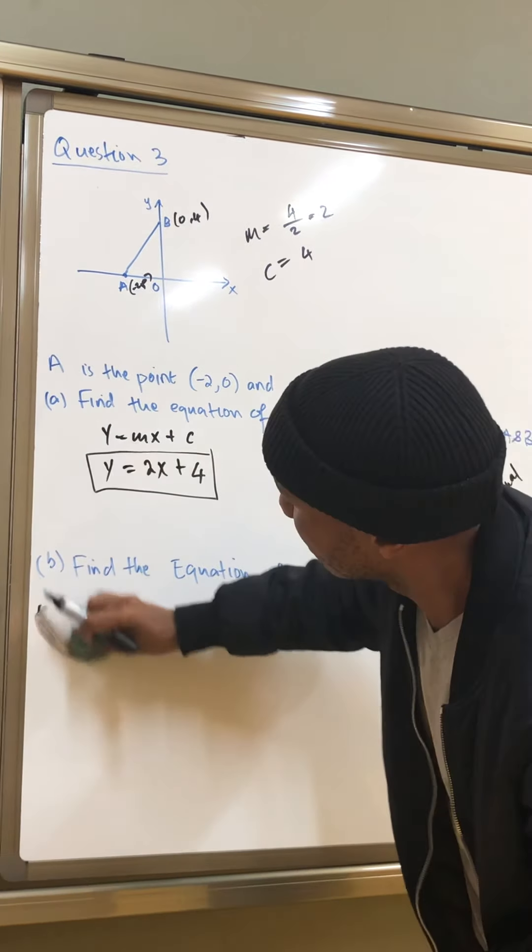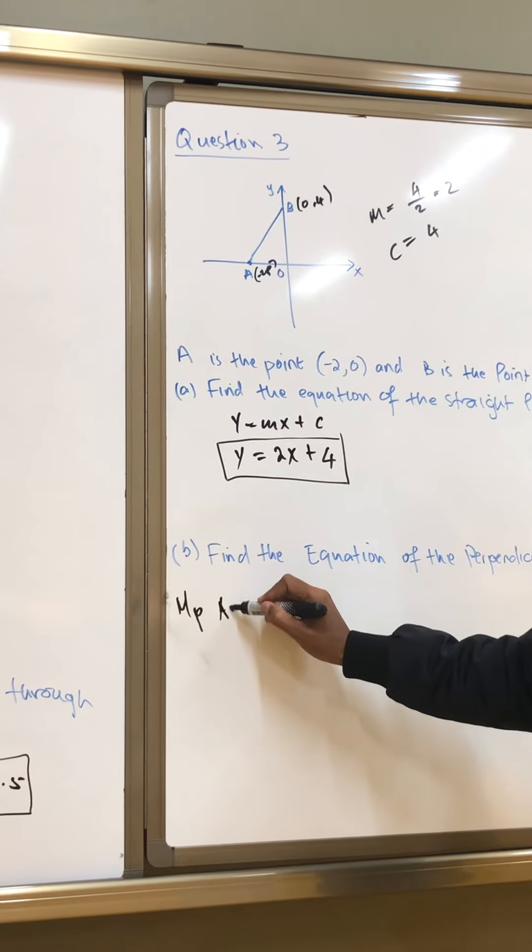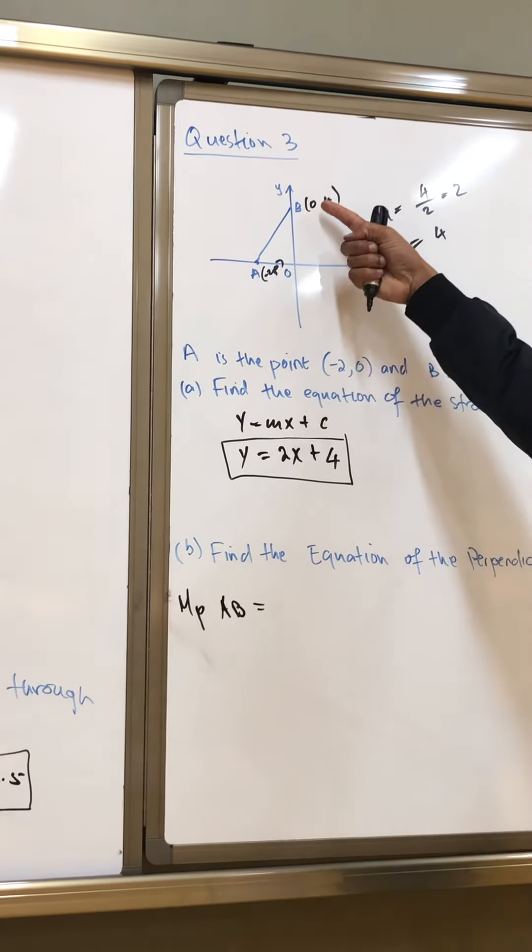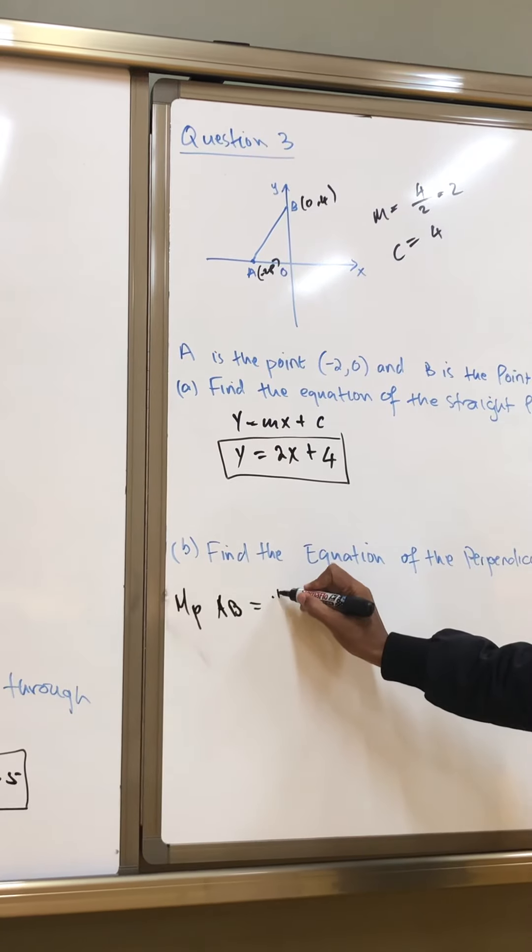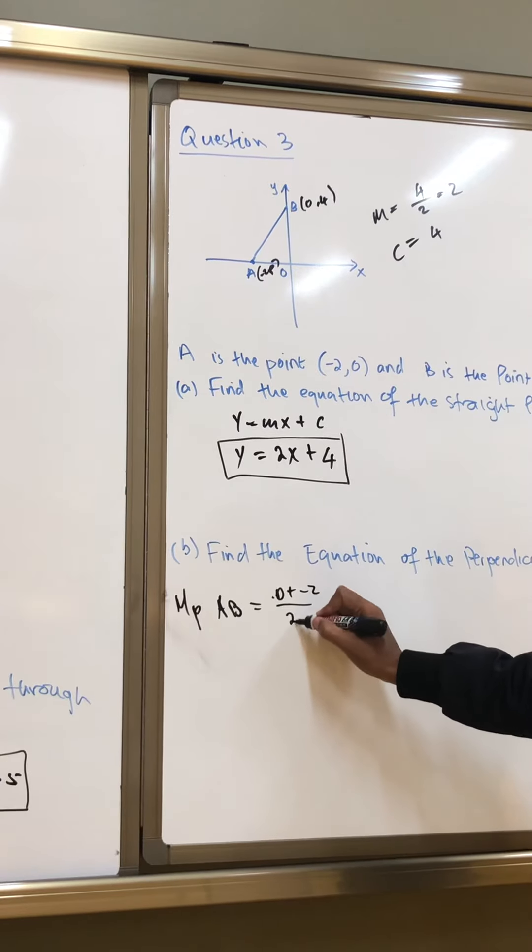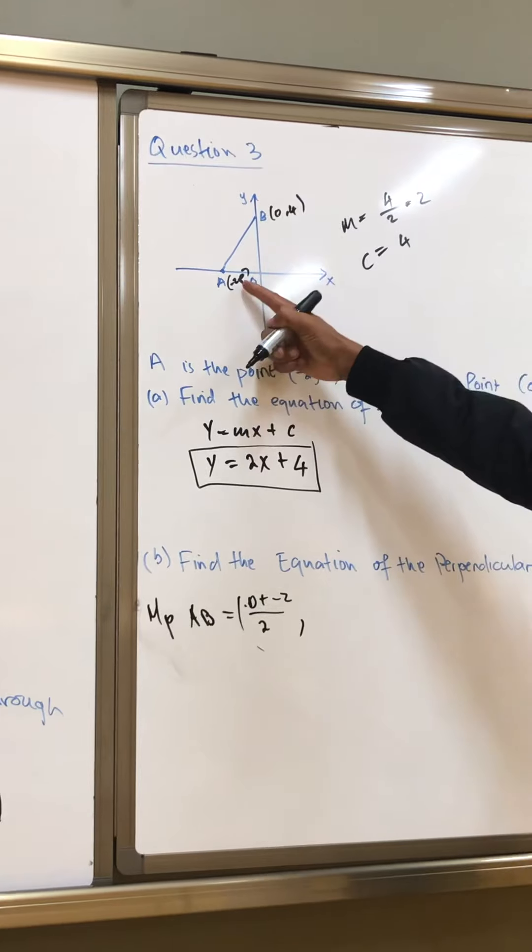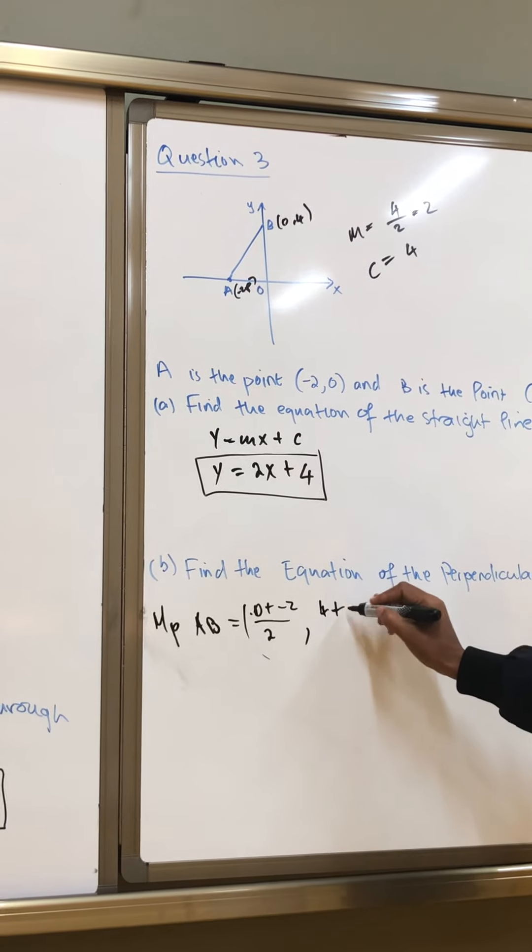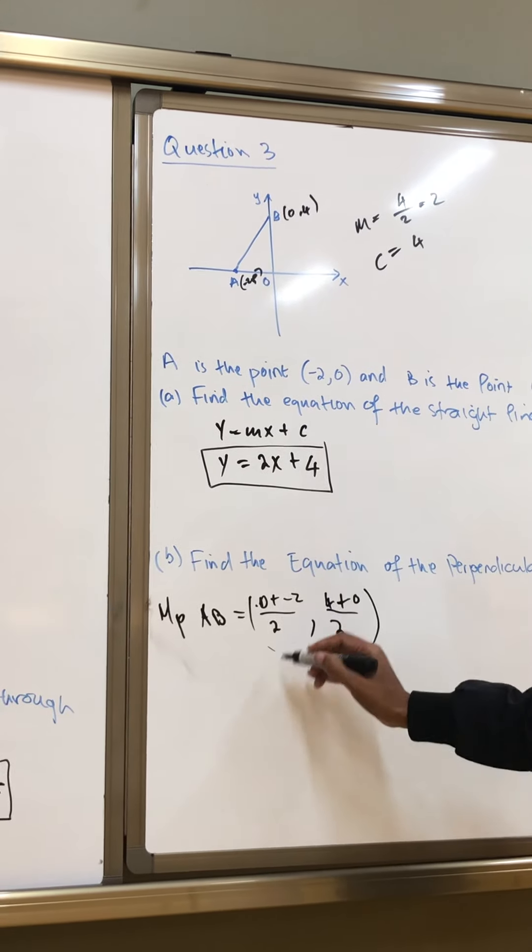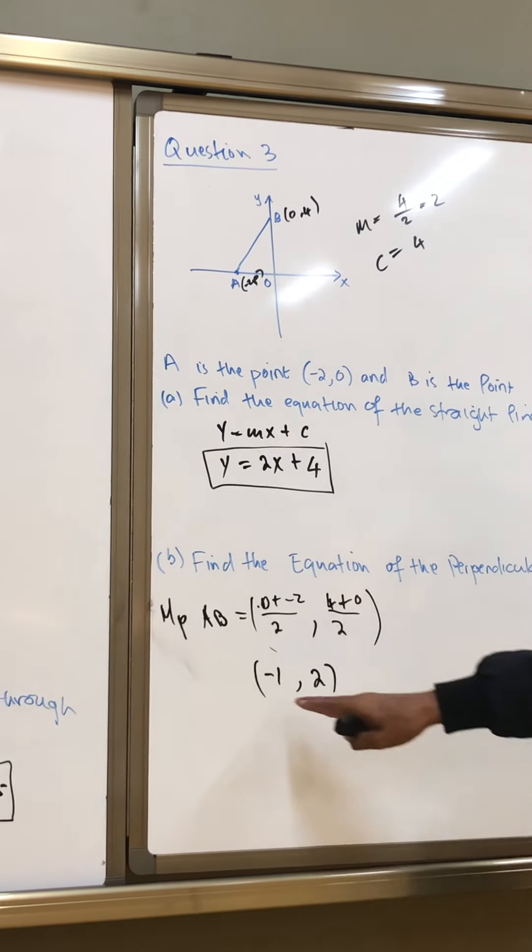So, the midpoint. Midpoint of AB. So, it's 0 plus negative 2, divided by 2. So, here, that would be negative 1 and 2. So, that is the midpoint.